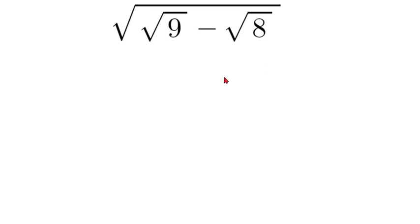First thing we're going to do is solve for the individual square roots. We should know that square root of 9 is 3, and we should also know that 8 can be rewritten as 2 to the power of 3.